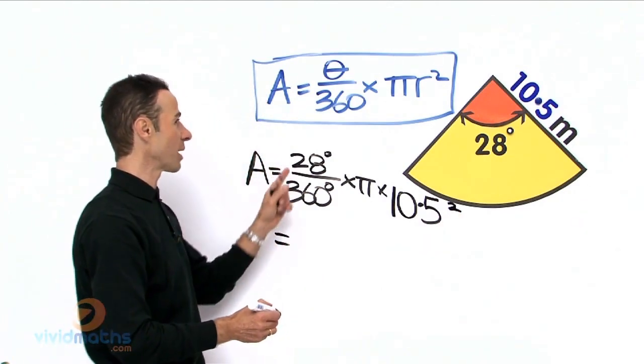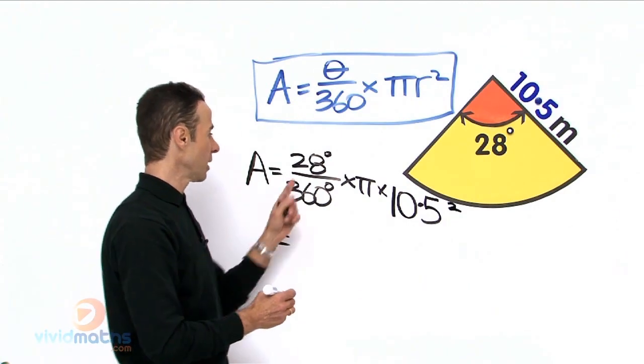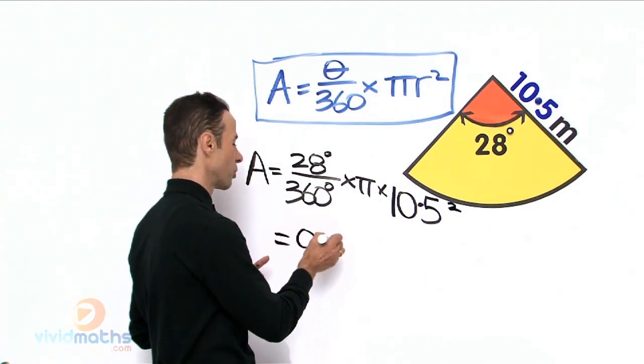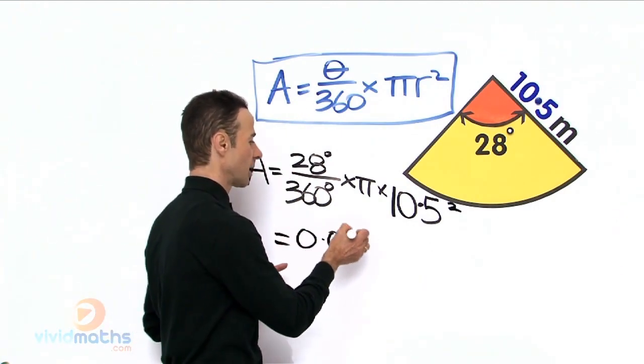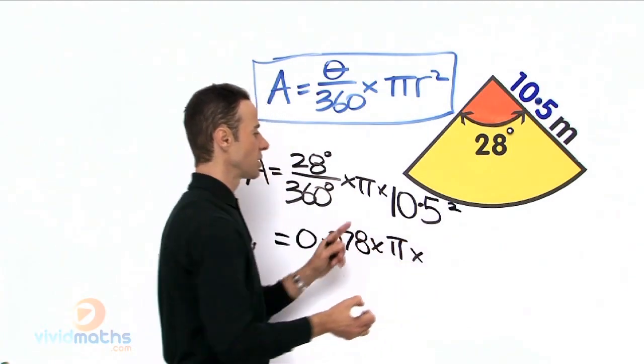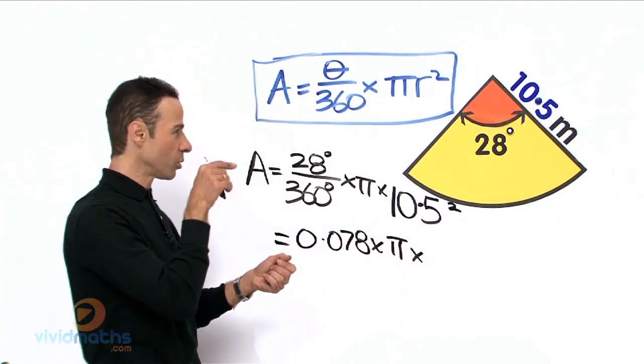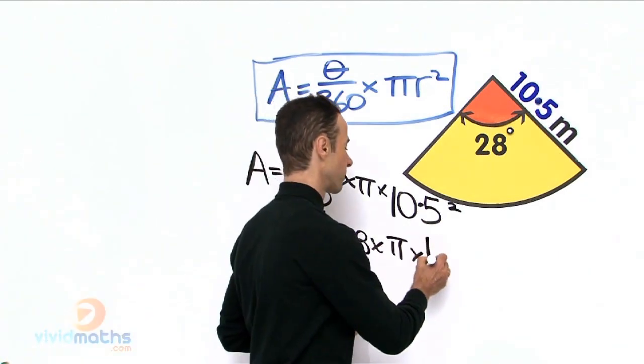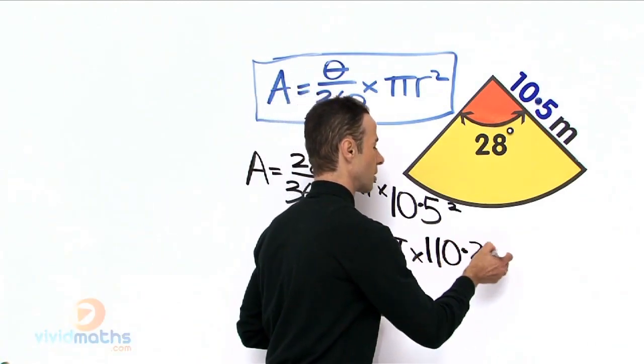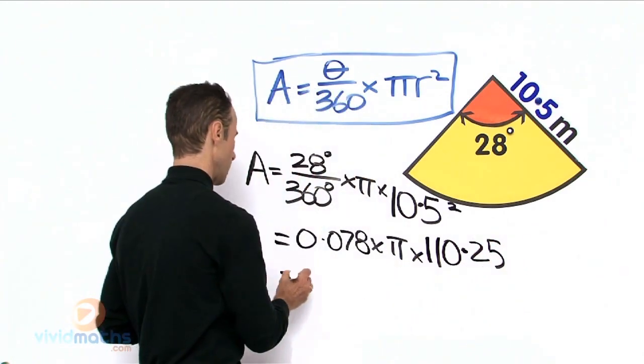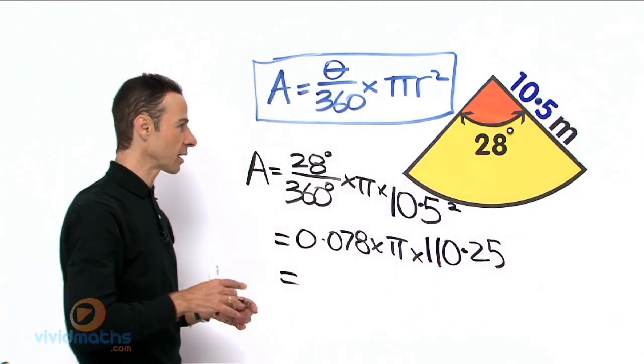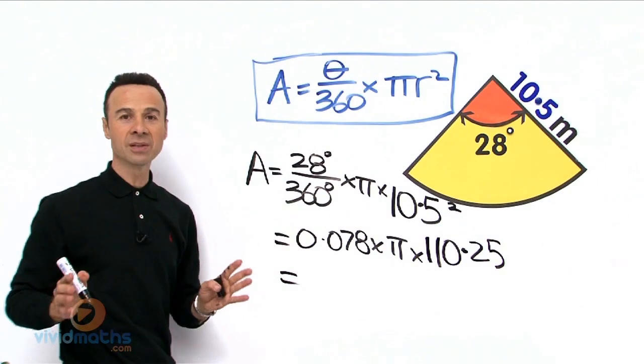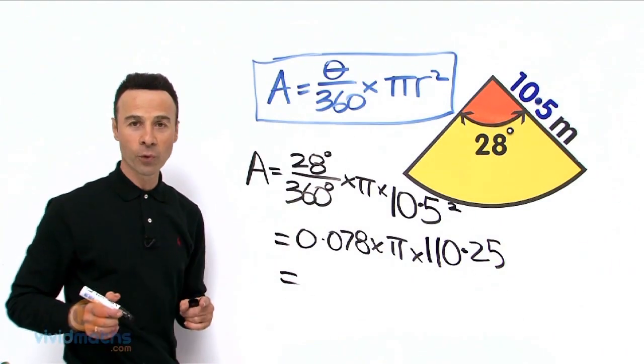Let us put that into our calculator. We will get here 28 divided by 360 is 0.078, times pi times 10.5, all squared. 10.5 squared is 110.25, and putting the whole thing in the calculator in one hit is 26.94 meters squared.